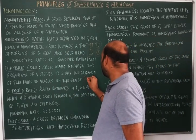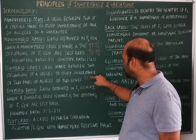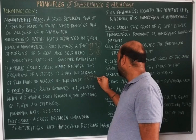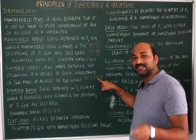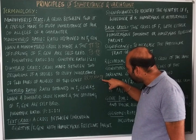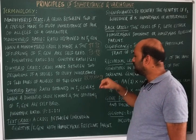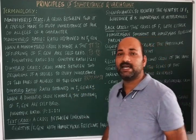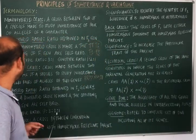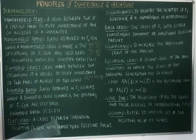For example, RRYY represents round yellow seeds — round is dominant for shape, yellow is dominant for color — crossed with rryy (wrinkled green seeds). Here rr represents wrinkled shape and yy represents green color. Two pairs of alleles are involved, making it a dihybrid cross.